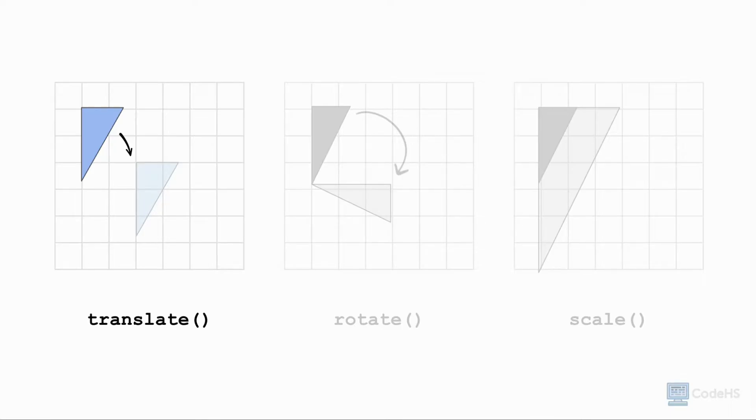A translation is the act of moving a figure from its original position on the coordinate plane without changing its shape, size, and orientation. To translate a shape in P5JS, we use the translate function.